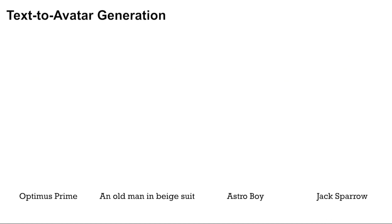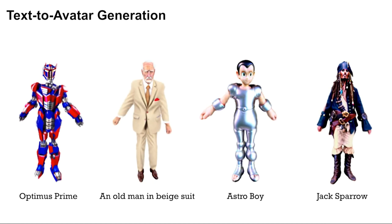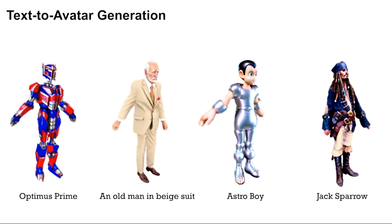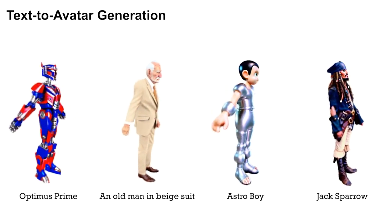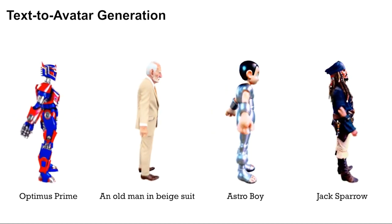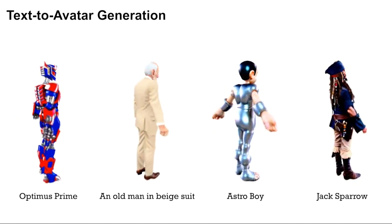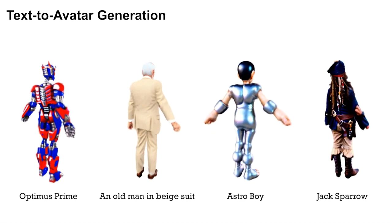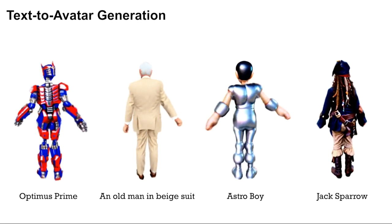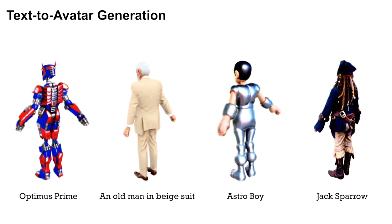Given text prompts, our 3D Gaussian-based method can generate realistic and highly detailed avatars and be rendered in 1K resolution at 100 frames per second.